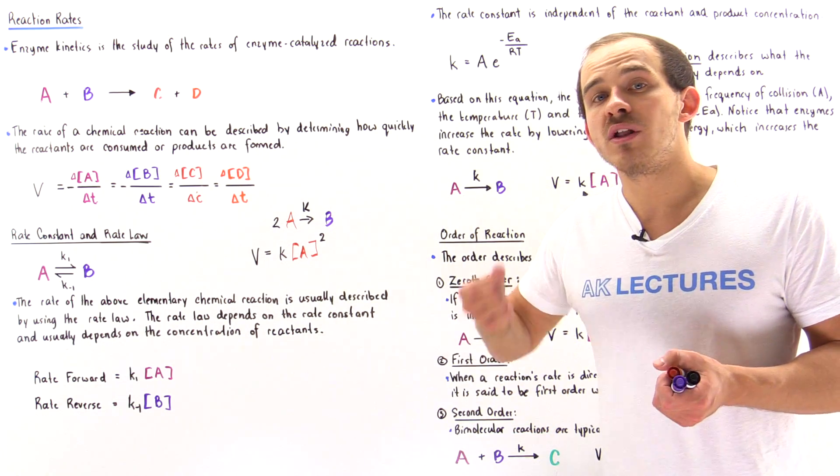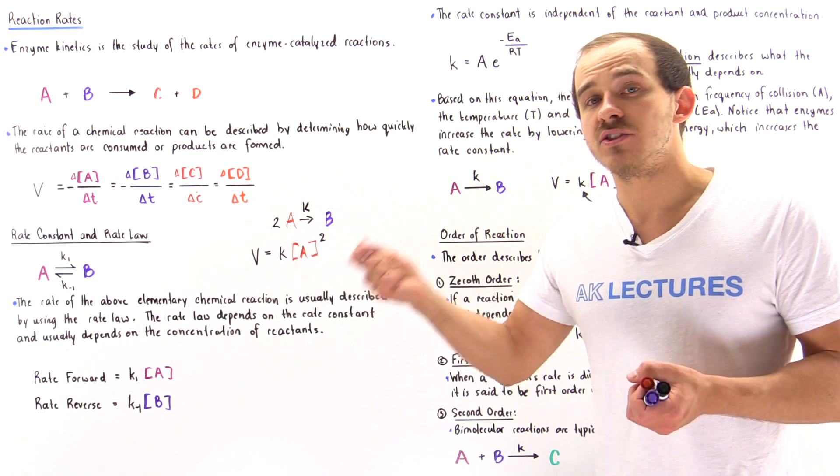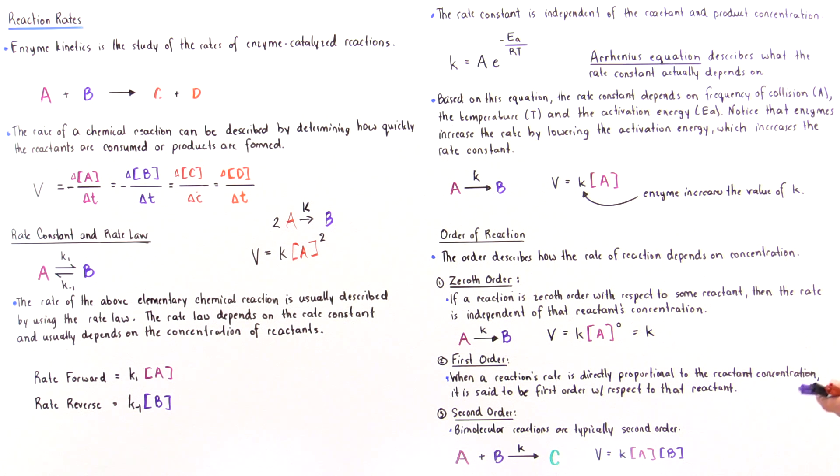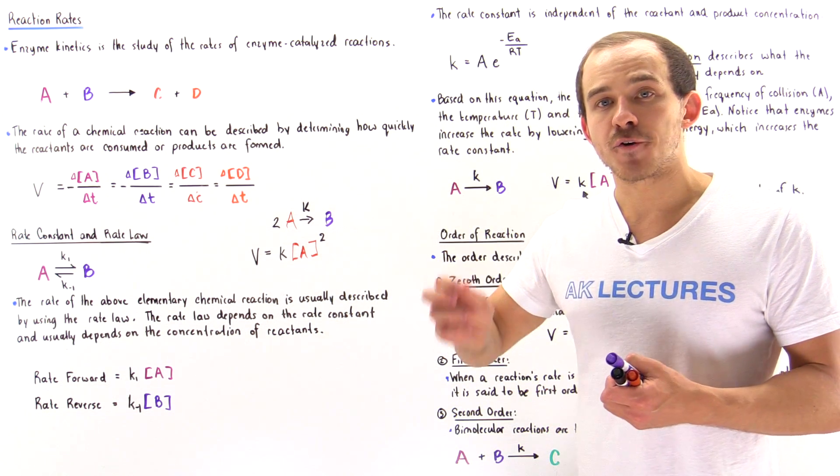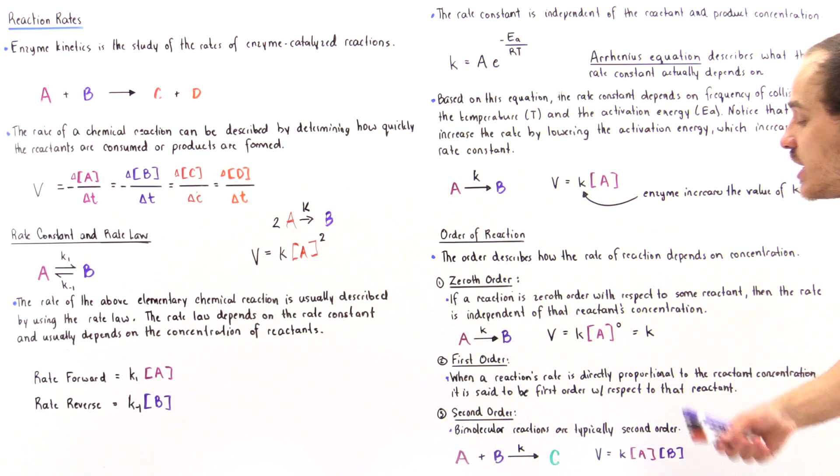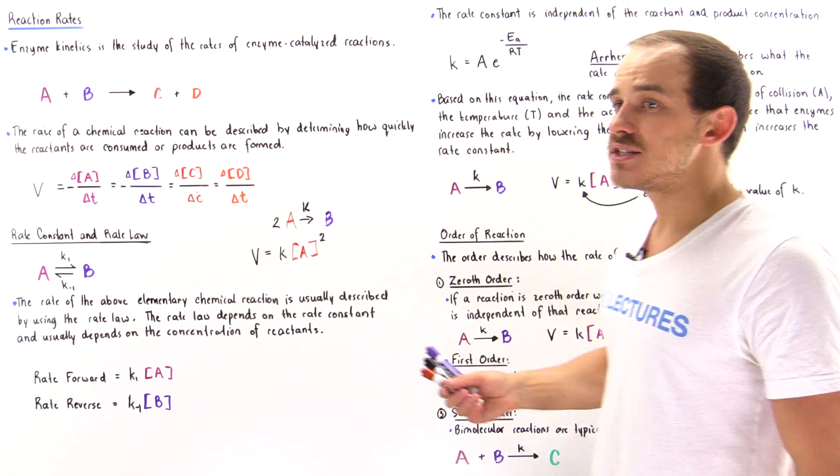Then changing A will actually have a drastic effect on the rate of that reaction, and that's exactly why this case is a pseudo first order. It's actually a second order reaction that behaves as if it was a first order.